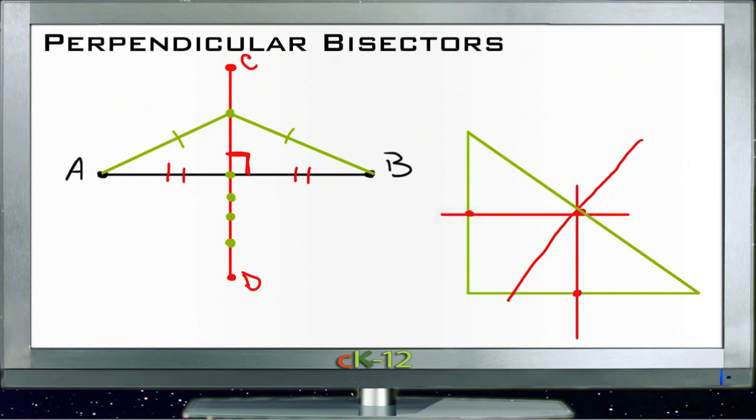Then the point where all three of those meet will be obviously different on each triangle, but that point is called the circumcenter. And we'll deal with that some more when we start talking about circles and combined shapes.